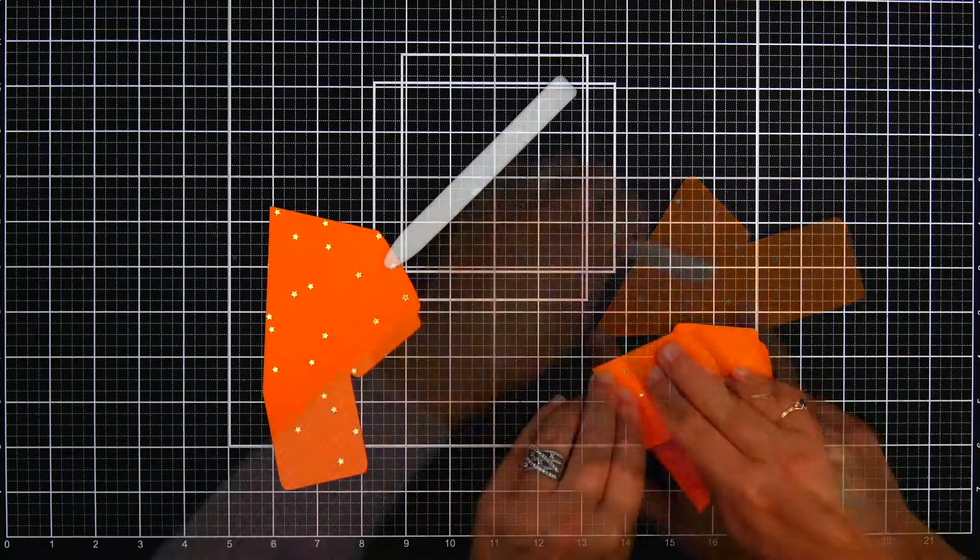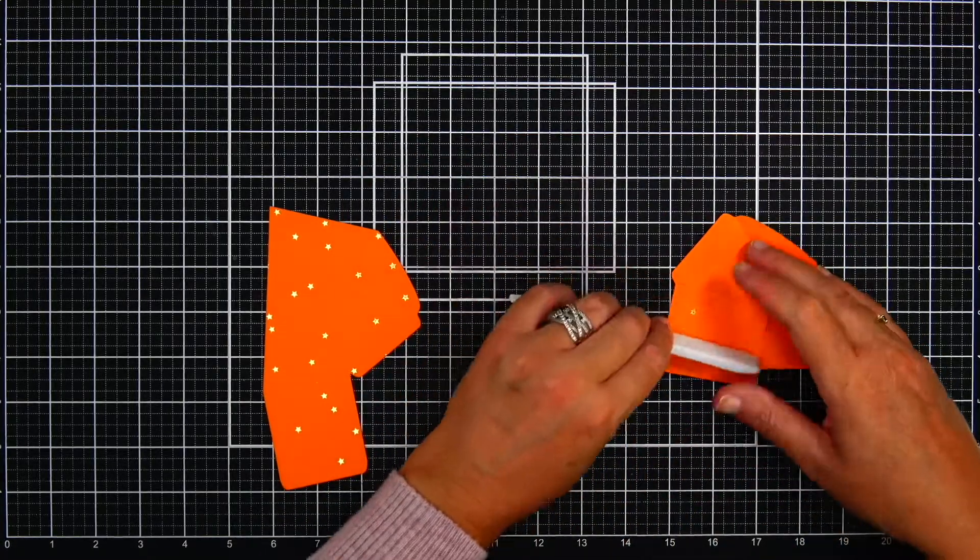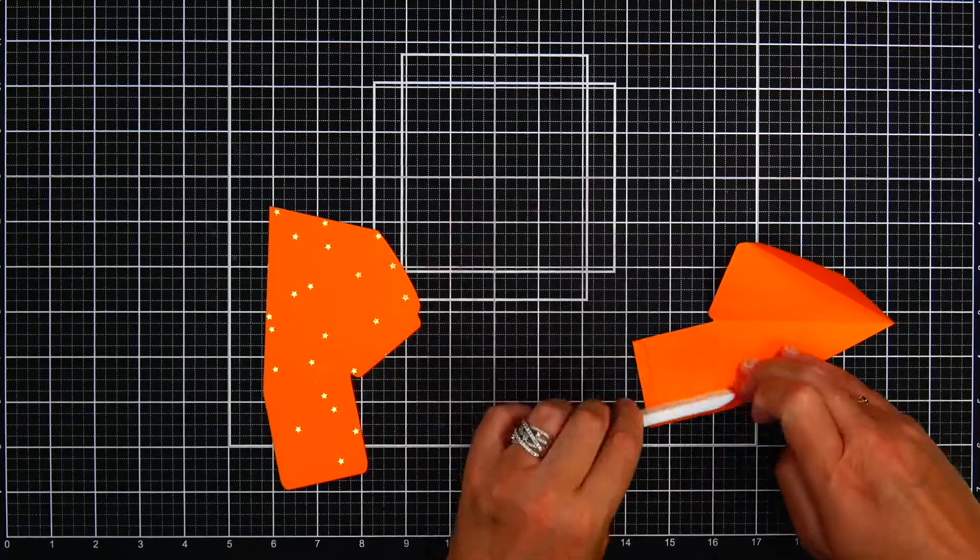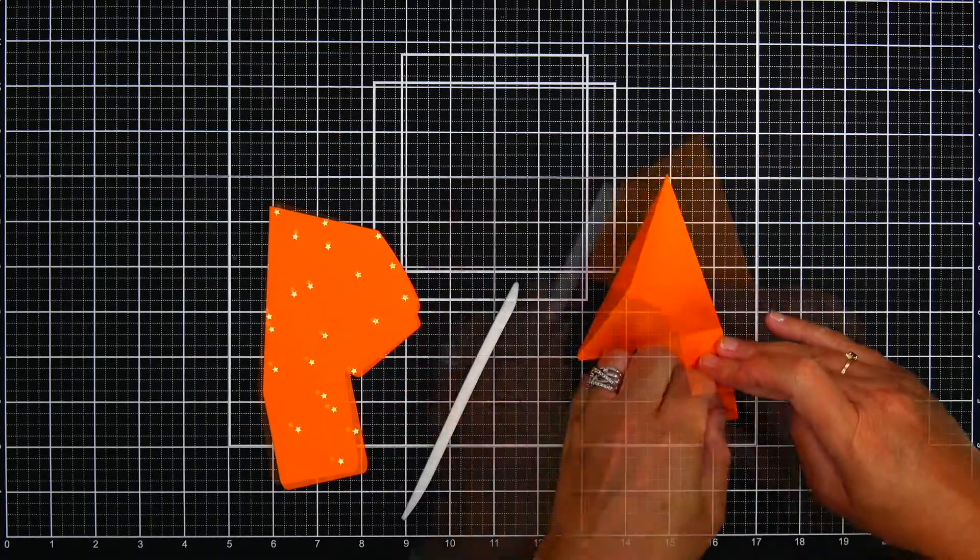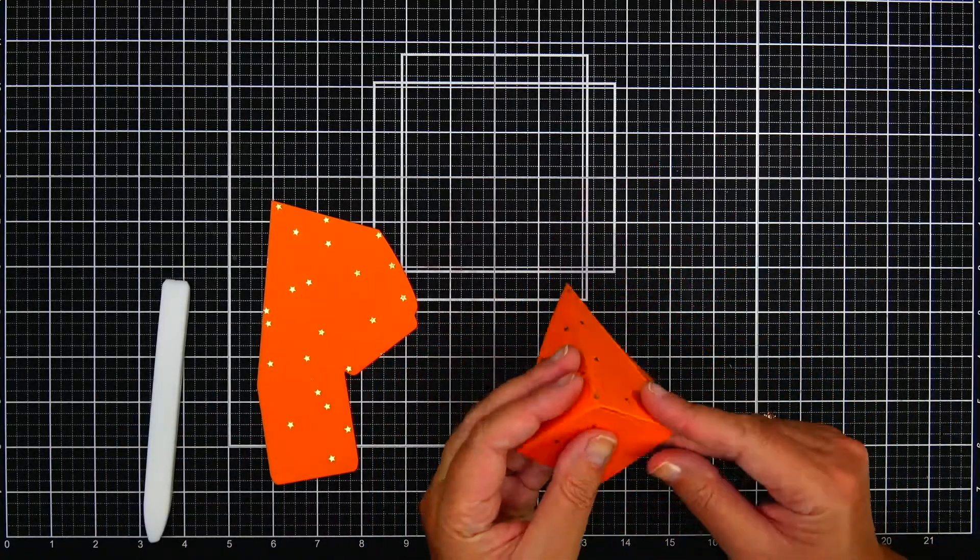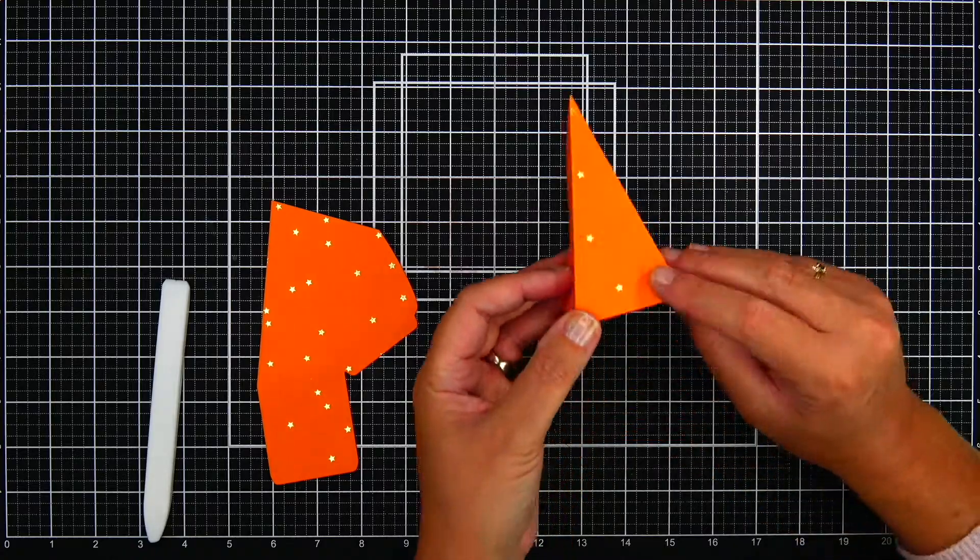Right now all I'm doing is folding the score lines that the pyramid box die imprints into the cardstock. I'm using my bone folder to really enforce those folds. I want my folded lines to be really sharp, especially towards the top, so the pyramid has a nice pointy top.